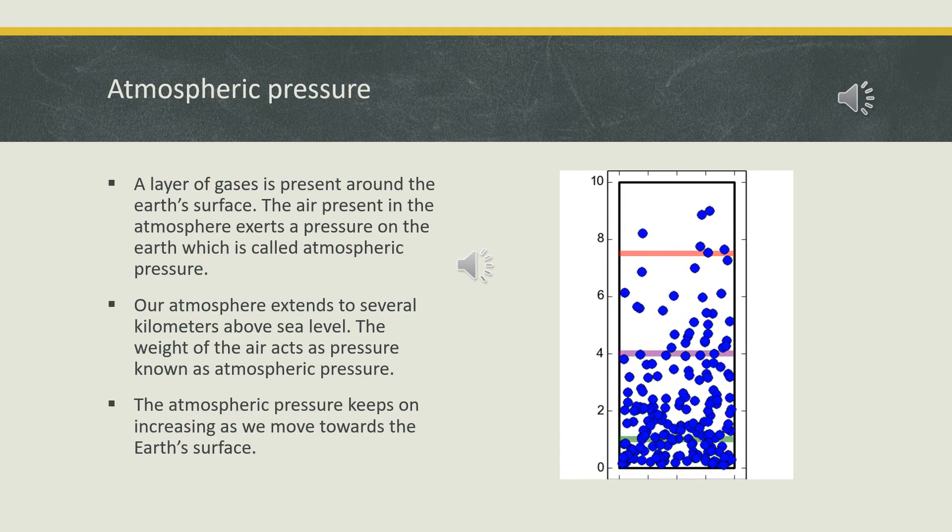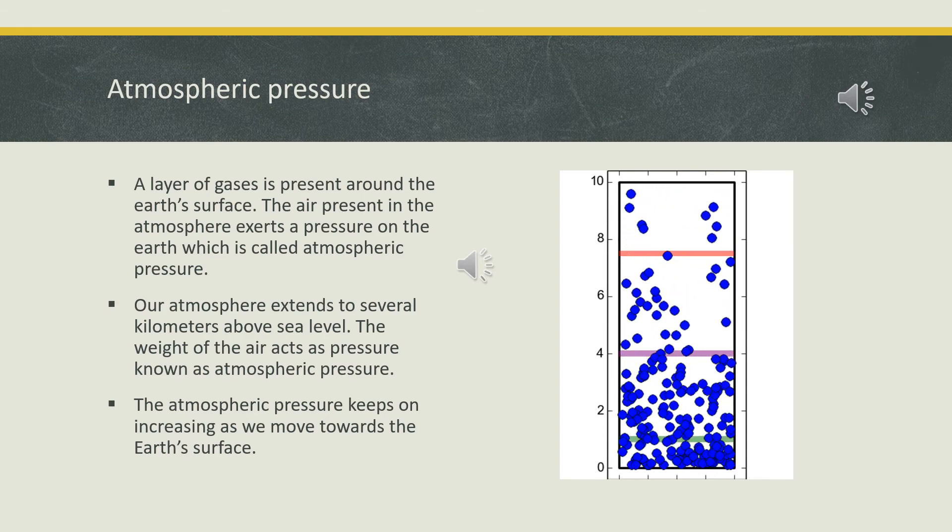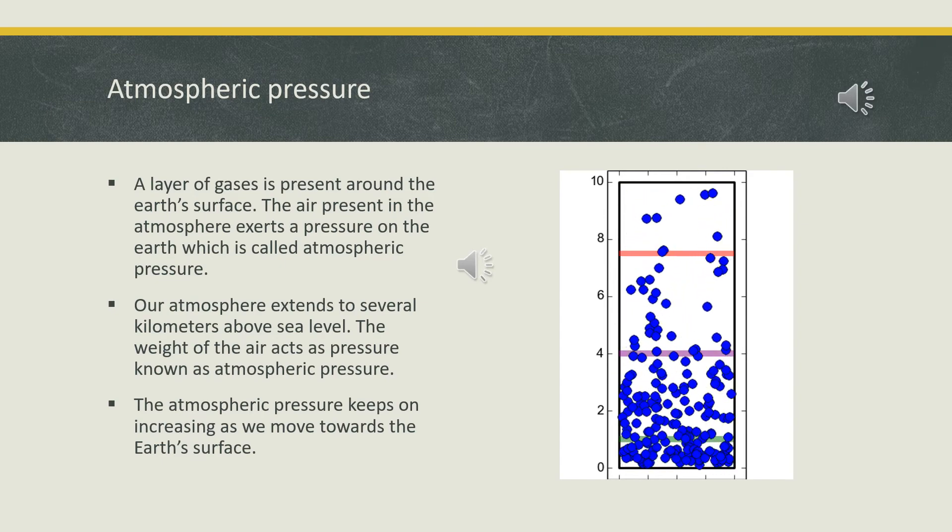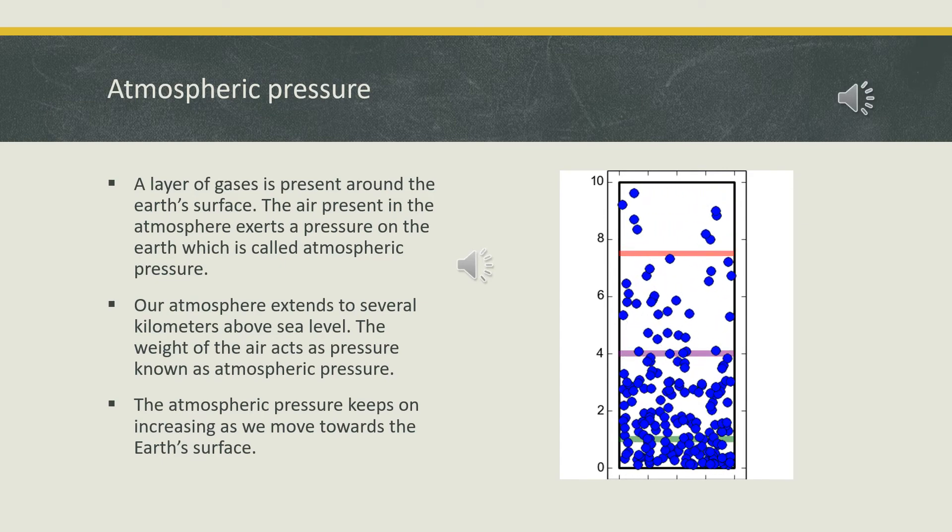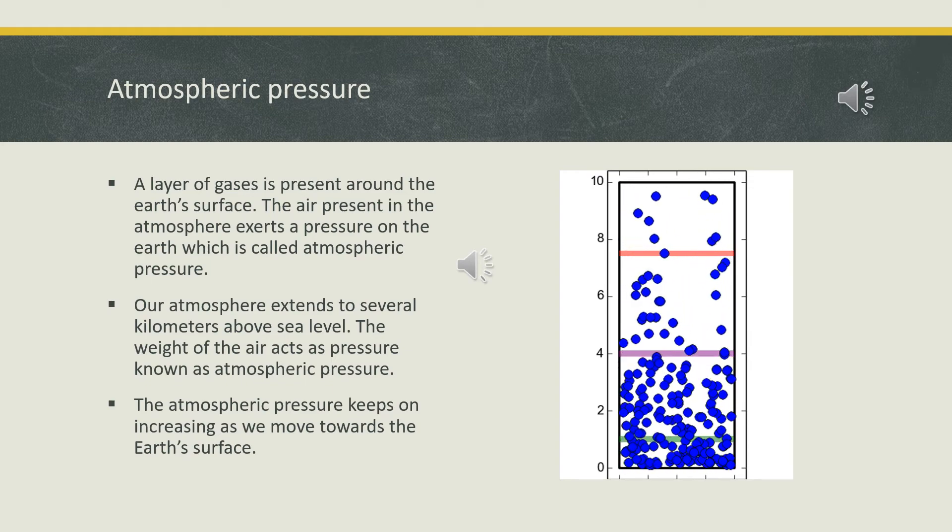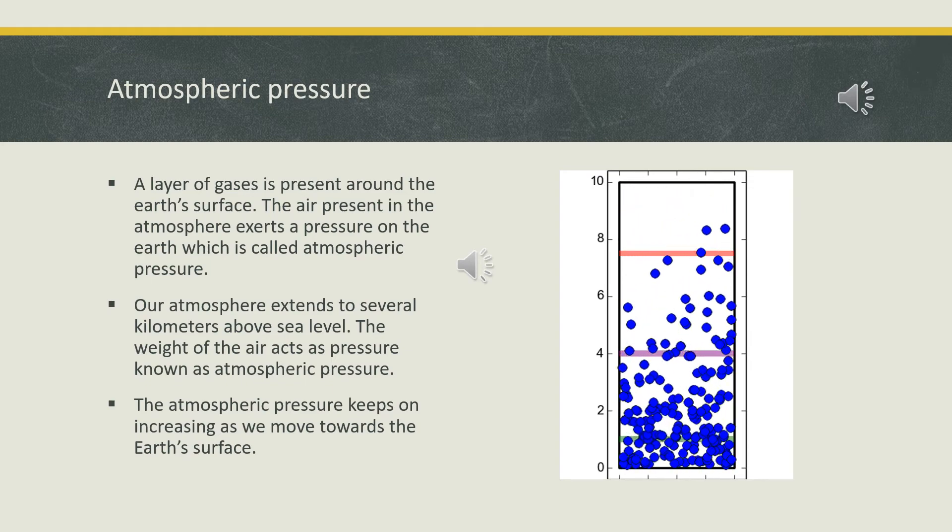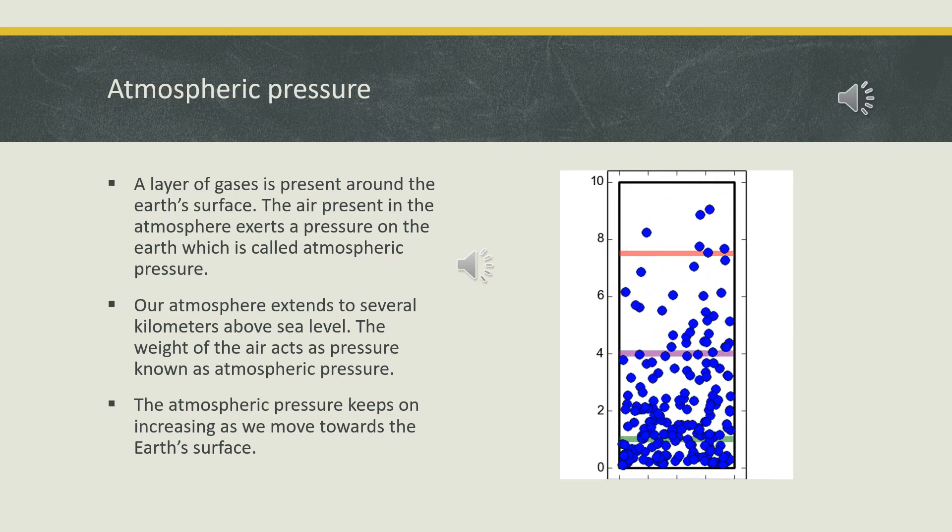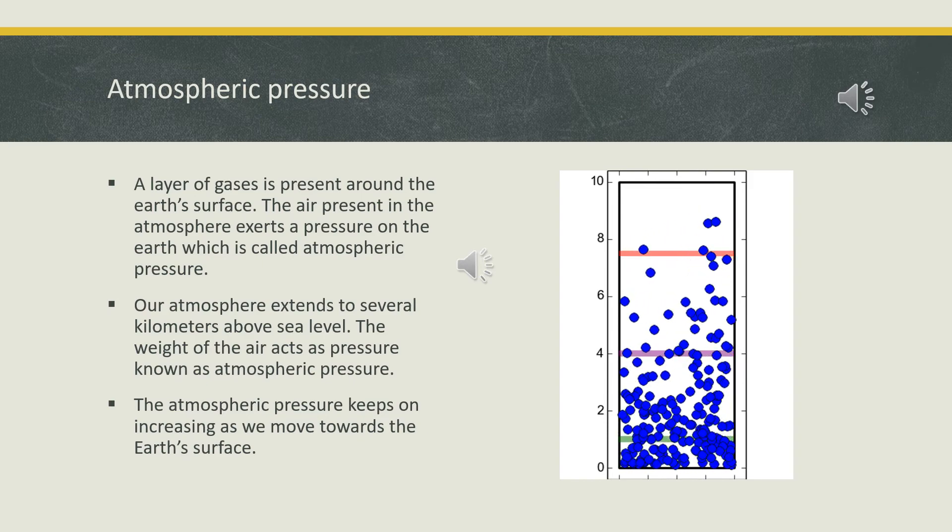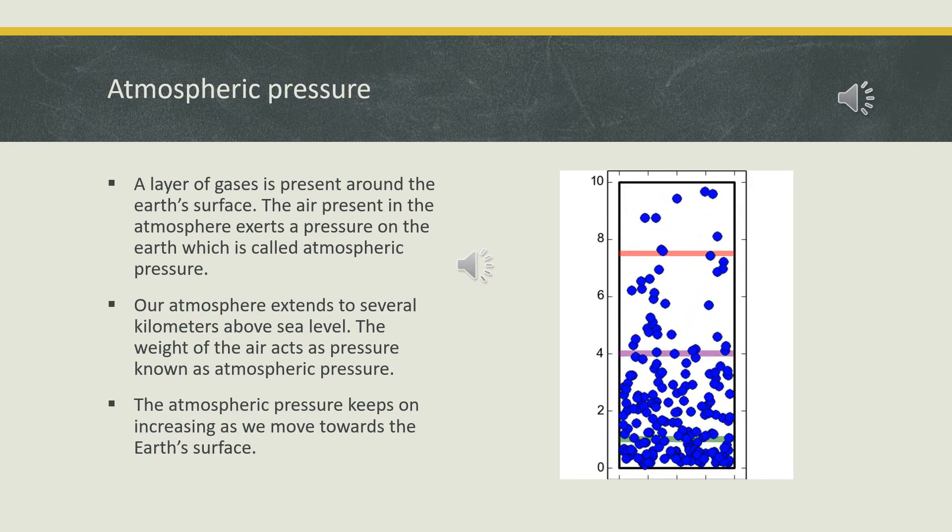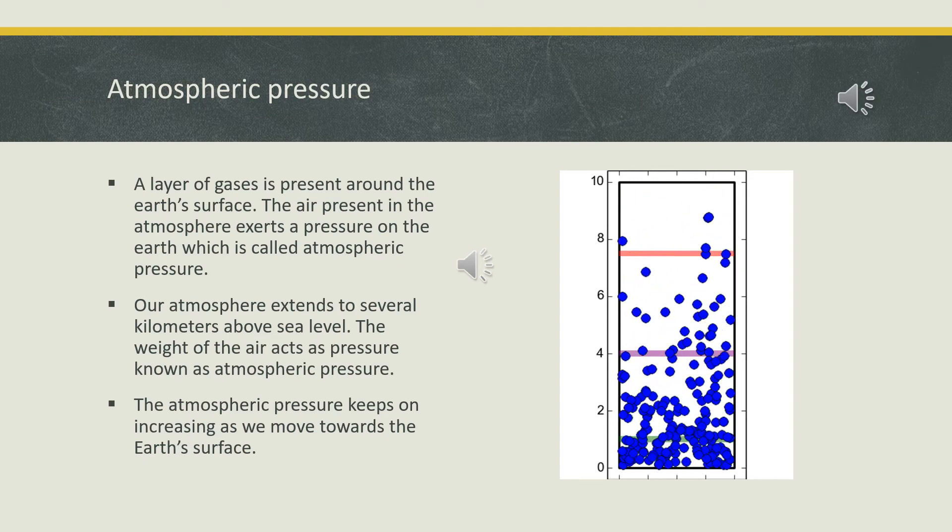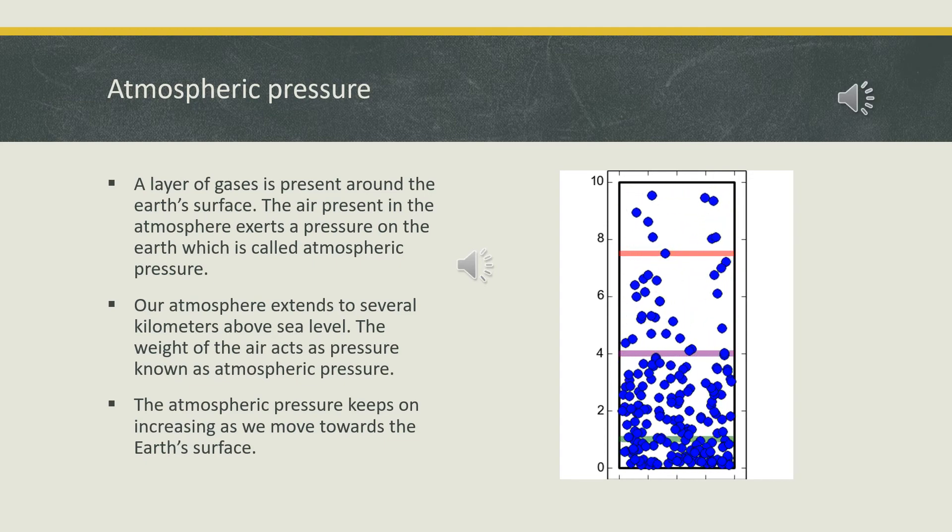This is the main reason why when a mountaineer goes to the higher altitude, they have to use either oxygen cylinders or other ways to make sure that the pressure doesn't decrease too much on their body. If the pressure decreases, then blood may come out of their nose or some other joints.